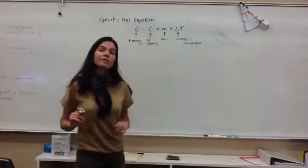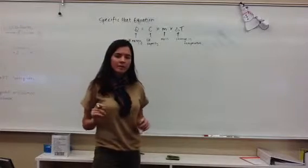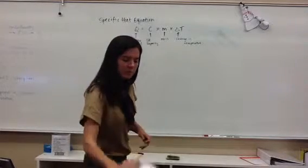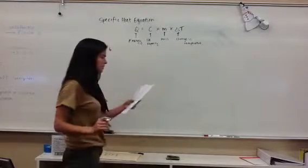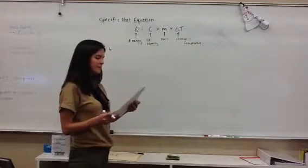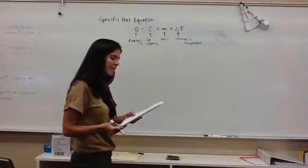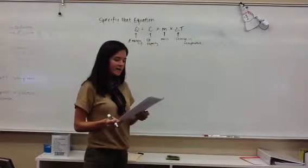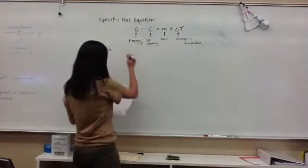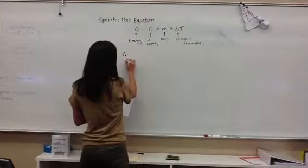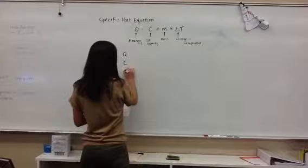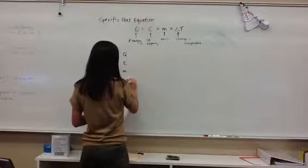We're going to be constantly referring to this equation throughout these problems. Number 6 in your note packet refers to the enthalpy of 1 gram of substance increasing by 508 joules when it's heated by 20 degrees Celsius. So, we're going to fill in our variables, Q, C, M, and delta T.